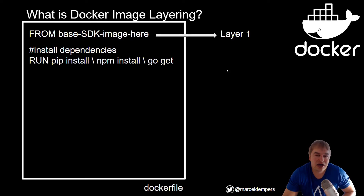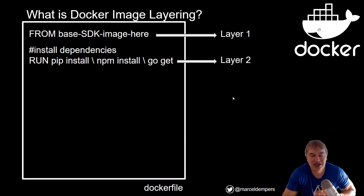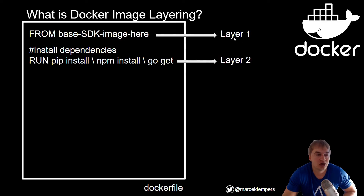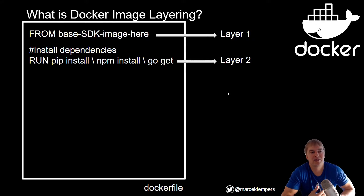We then had a RUN statement where we installed dependencies using pip, npm, go get, or dotnet restore — that gives us layer two. Sequence here is everything, because when you change layer one Docker will automatically re-run all layers from top to bottom. So it's really important to put things you change often lower down in the Dockerfile.